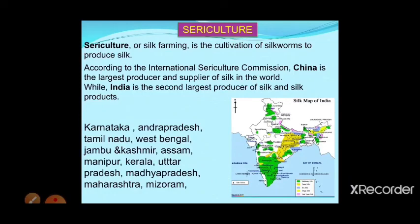The major silk-producing states in India include Karnataka, Andhra Pradesh, Tamil Nadu, West Bengal, Jammu and Kashmir, Assam, Manipur, Kerala, Uttar Pradesh, Madhya Pradesh, Maharashtra, and Mizoram. If you observe, maximum northeastern states produce silk. The eastern and southern parts of India also produce silk, along with some northern states like Jammu and Kashmir.